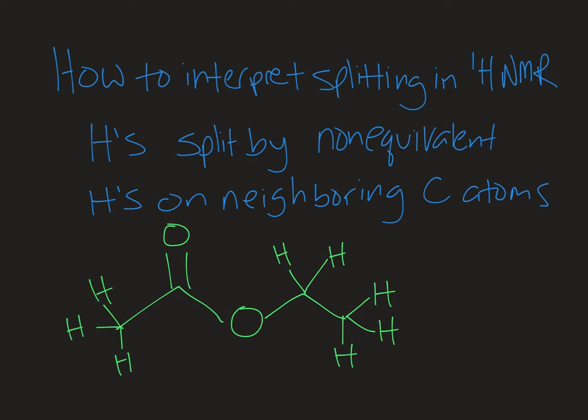Protons will be split by non-equivalent protons on neighboring carbon atoms. If you haven't watched my video on how to assign unique protons, you need to go back and do that first, then come back and watch this video. In that video we talked about how to identify unique protons, label those, and then use that information to predict the number of signals in a proton NMR spectrum. In this video we're looking at what those signals look like.